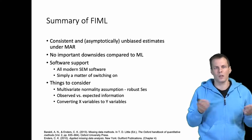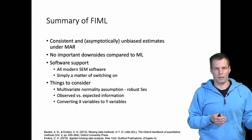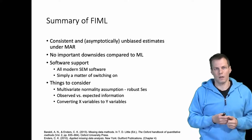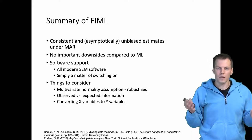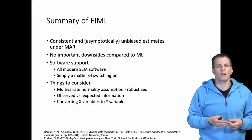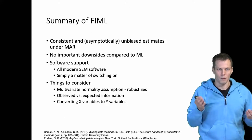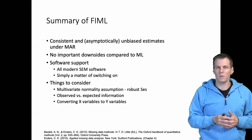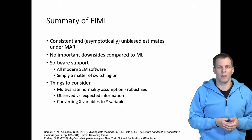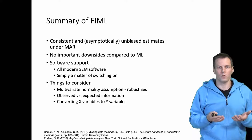It is simply a matter of switching the estimation approach. You might have options like ADF, WLS (weighted least squares), maximum likelihood, robust maximum likelihood, and FIML as different estimators. If you simply choose the FIML estimator — there is also a robust variant that includes robust standard errors — and run the software, there is no additional specification involved. It is just switching the estimator and you are done, which is very convenient.